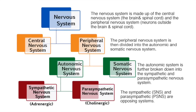The nervous system is made up of the central nervous system, which is the brain and spinal cord, and the peripheral nervous system, which are the neurons outside the brain and spinal cord. The peripheral nervous system is then divided into the autonomic and somatic nervous system.